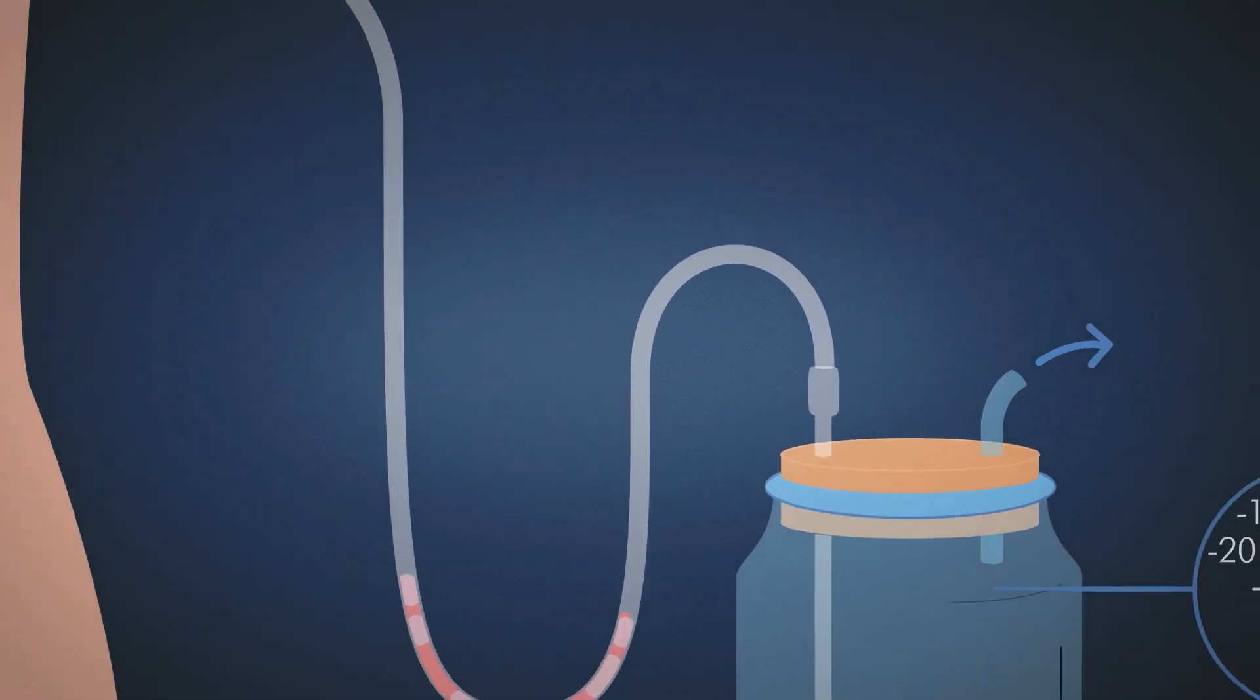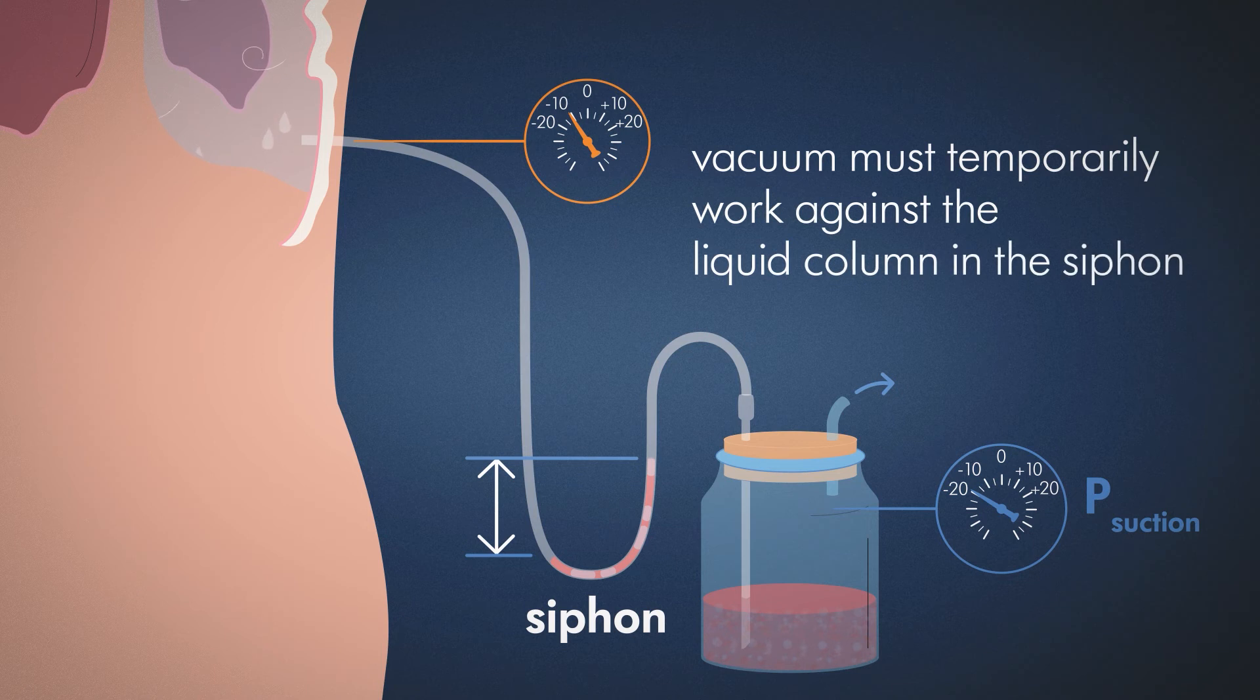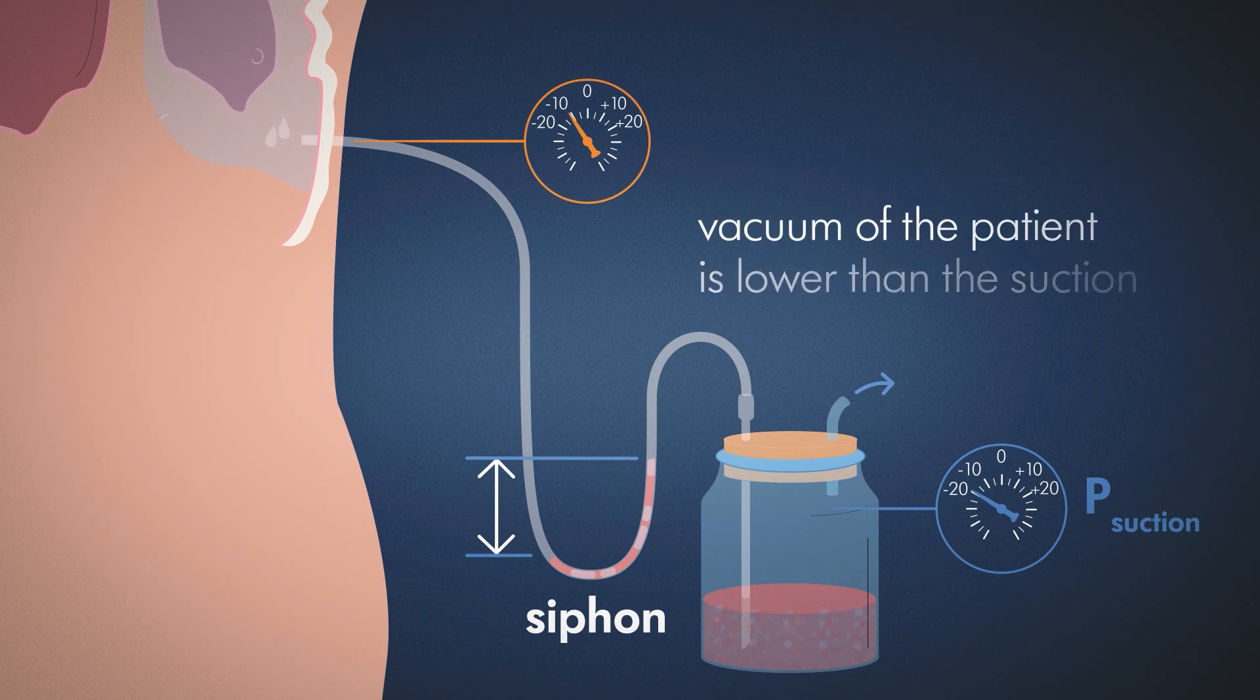A siphon can form if the tube sags between the patient and the drainage system. If the drainage hose carries both liquids and air, the vacuum set on the unit side must temporarily work against the liquid column in the siphon. The vacuum applied to the patient is then lower than the suction applied to the device.